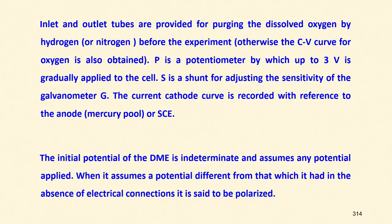The initial potential of the dropping mercury electrode is indeterminate because nothing is happening there — we cannot determine what the actual voltage is, so it assumes any potential we apply. When it assumes a potential different from what it had been in the absence of electrical connections, it is said to be polarized.